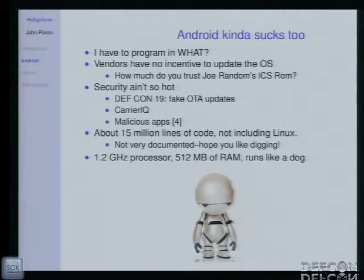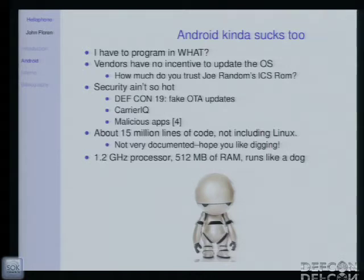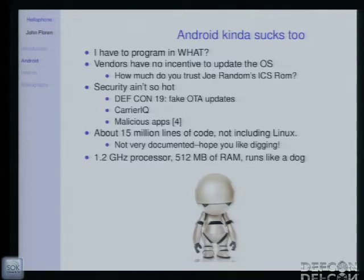But then I actually started playing with it and realized I had to use Java — or C++ with JNI. I apologize to the Java lovers, but I really want to gouge my eyes out when I use it. Most of my co-workers are interested in Android but they don't know Java. They're C programmers, C++ programmers, Ruby, Python developers. Those aren't really good options in Android — Python with Scripting Layer for Android is still kind of a second-class citizen. Beyond programming, vendors don't really have any incentive to keep updating the OS on your old phones. They'd rather you buy a new one in a year.